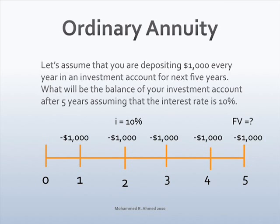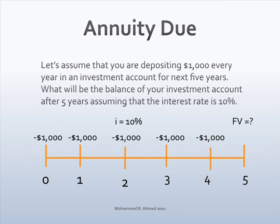It is the future value of annuity analysis. Next, draw a timeline for the same problem assuming that it is an annuity due. Time period is five years, depositing $1,000 at the beginning of the year for the next five years. Interest rate is 10% and the question mark is on the right-hand side. It is the future value of annuity analysis.